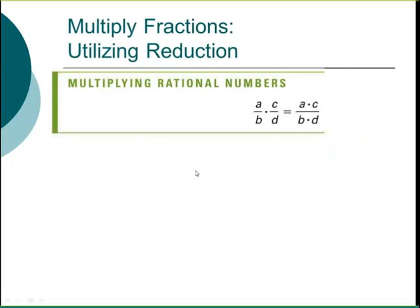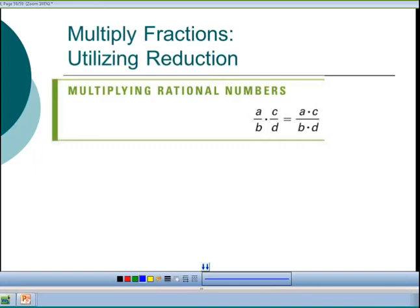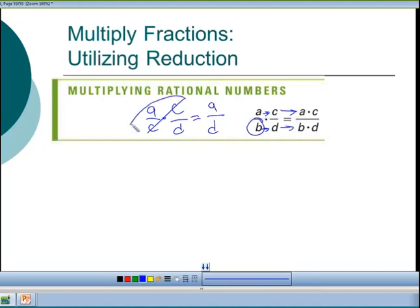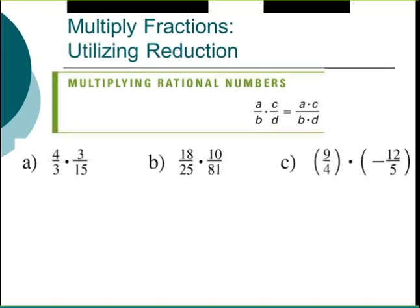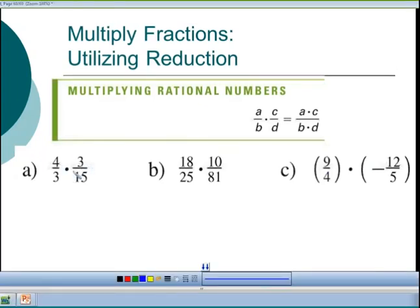For multiplying fractions, we multiply straight across — but I want to highlight cross-cancellation. If you have (a/c) × (c/d), the c's cancel and you get a/d. For example, rather than multiplying 4×3 and 3×15 then reducing, cancel the 3s first: you get 4 over 1 times 1 over 15, which gives 4/15 directly. No need to reduce at the end.